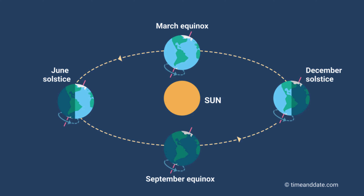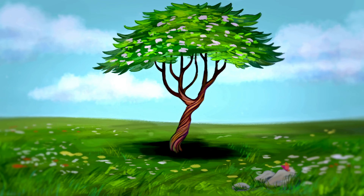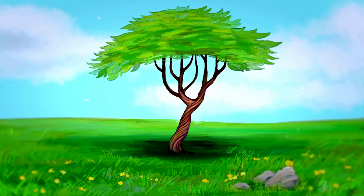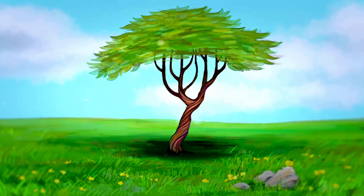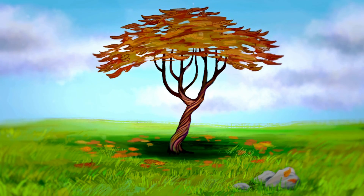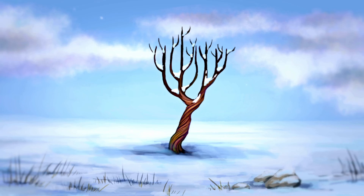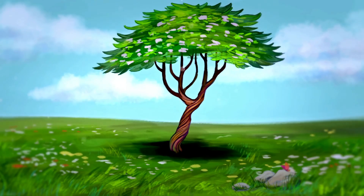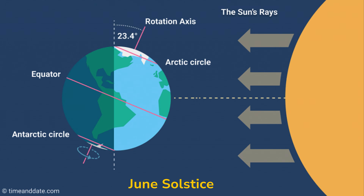Thanks to the tilt, as the Earth orbits the sun, different parts of the planet receive varying amounts of sunlight throughout the year. This creates our four distinct seasons: spring, summer, autumn, and winter. In June, the northern hemisphere is tilted towards the sun, meaning that light and heat from the sun is more concentrated, so it's hotter — this means it's summer in the north.